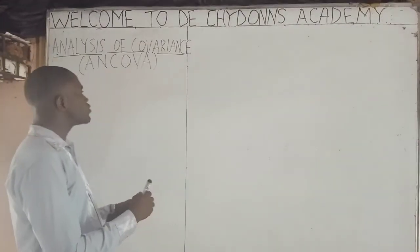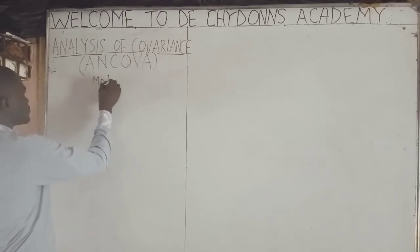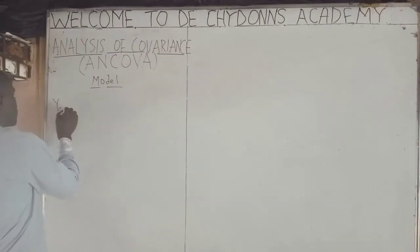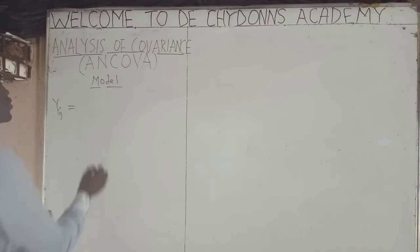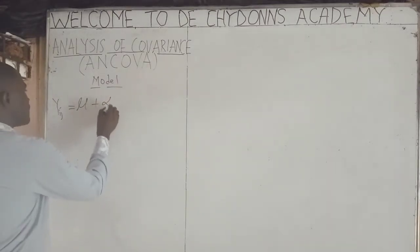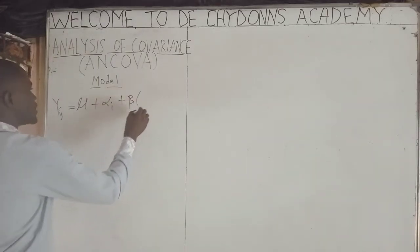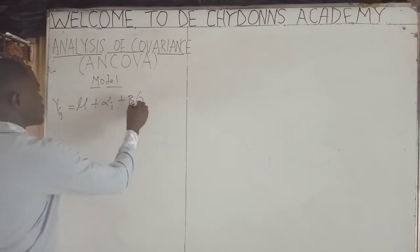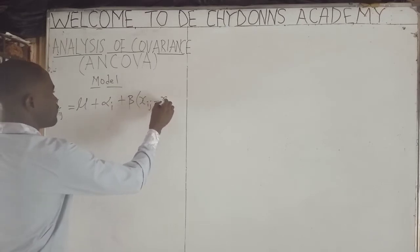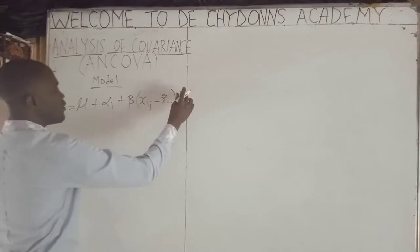Now we want to go into the model of ANCOVA. Like other statistical techniques that have their models, ANCOVA also has its model. The model is: Y-I-J equals the overall mean, plus the effect of the i-th treatment, plus the regression coefficient multiplied by the quantity: the covariate minus the mean of the covariate, plus random error.